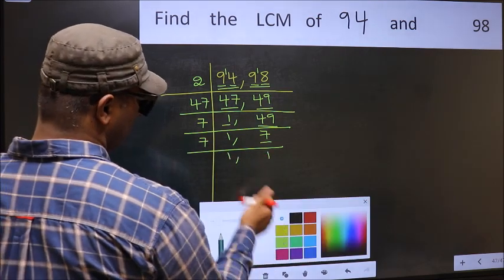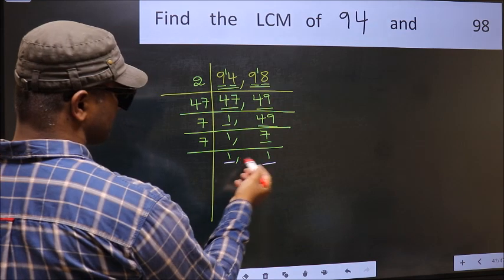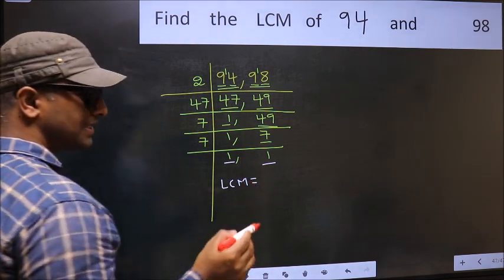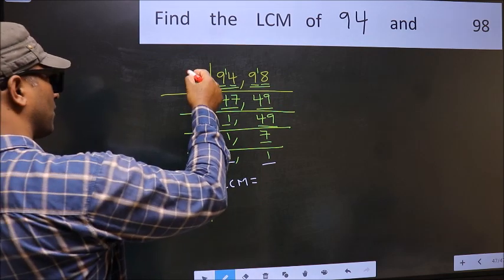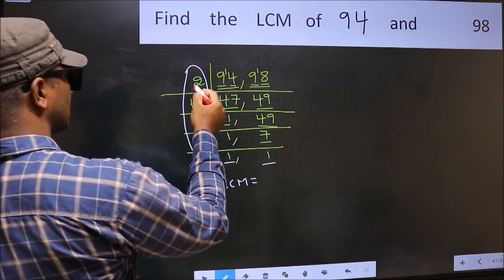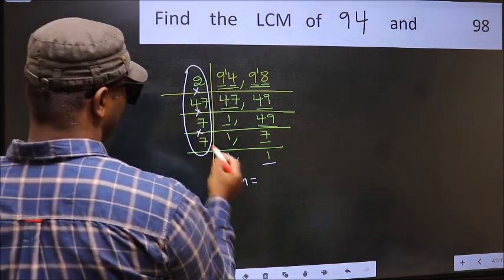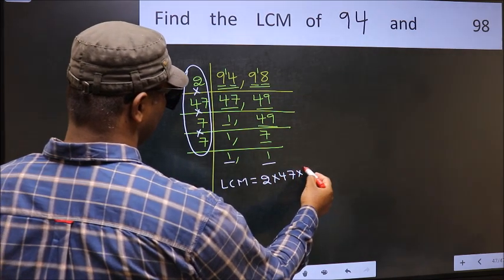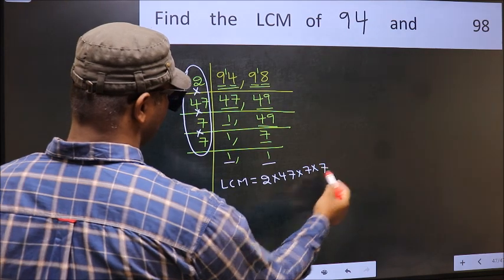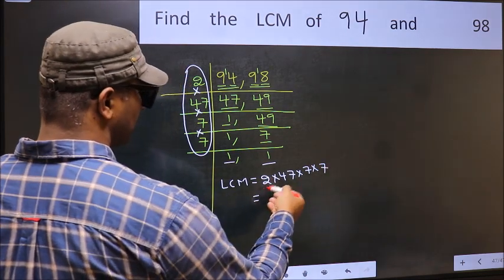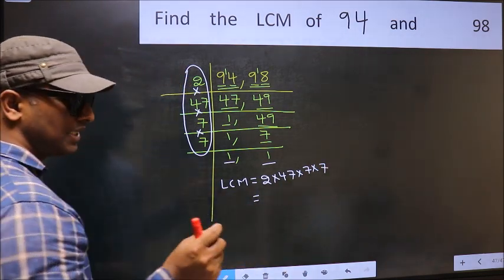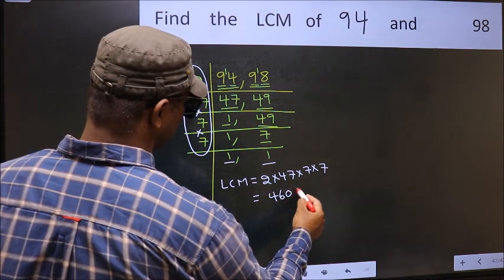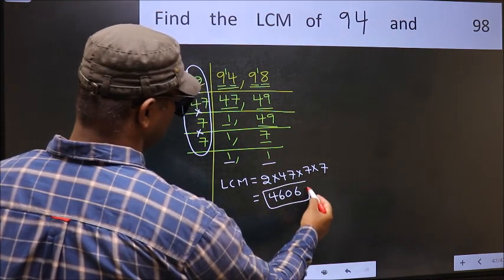So we got 1 in both the places. So our LCM is, LCM is the product of these numbers. That is 2 into 47 into 7 into 7. When we multiply these numbers, we get 4, 6, 0, 6 is our LCM.